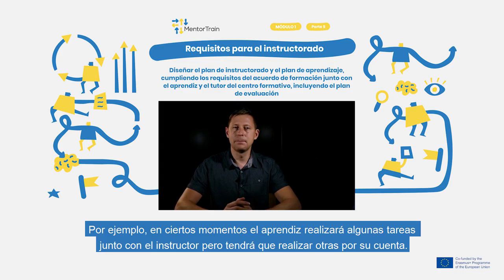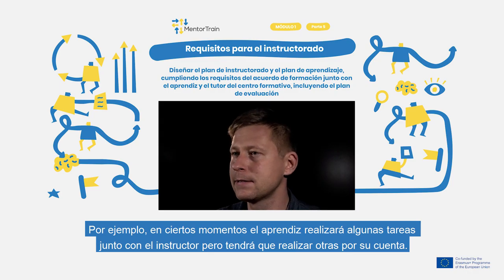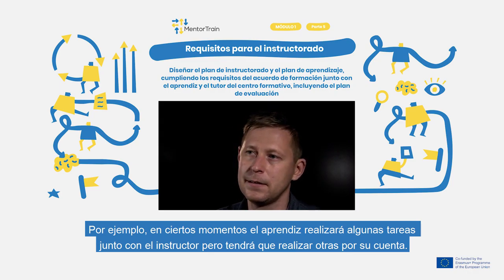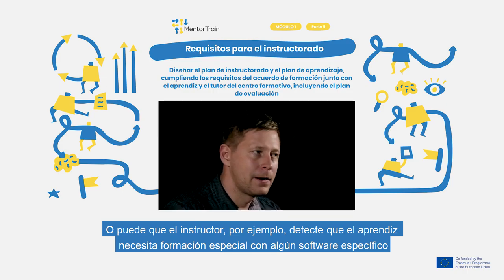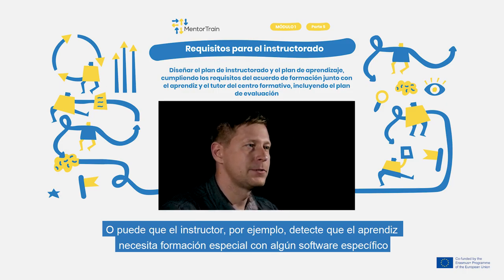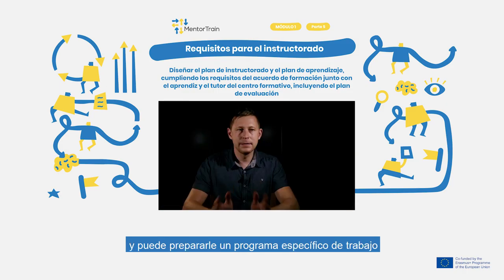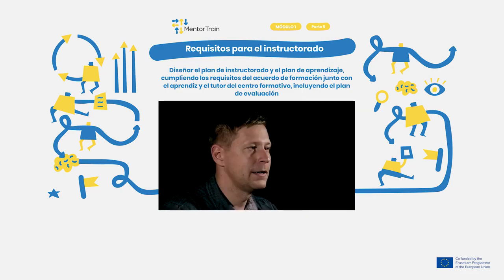How the mentor will do that must be included in the mentoring plan. For example, the mentor does some work together with the apprentice and next time the apprentice will do that alone. Or the mentor can already see that the apprentice needs some training — for example, working with Excel — and will arrange a special training for the apprentice.